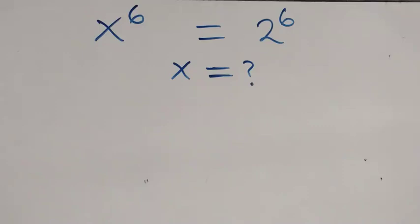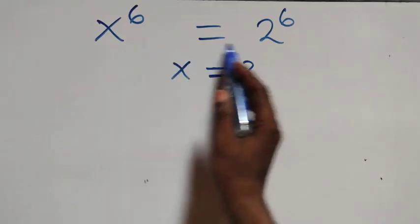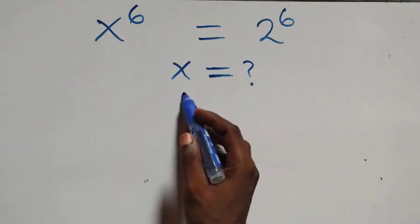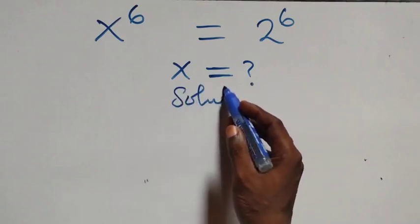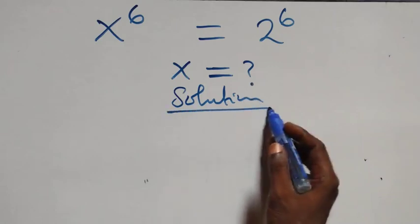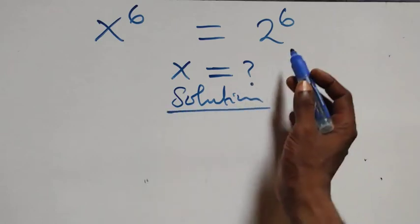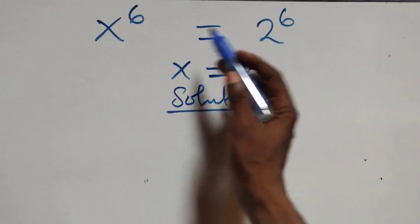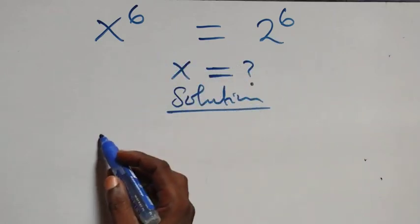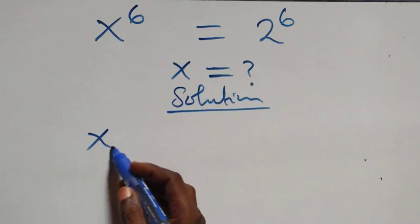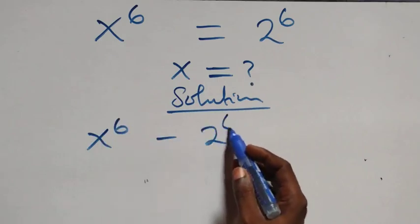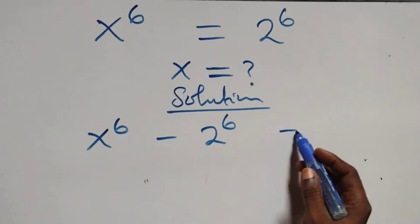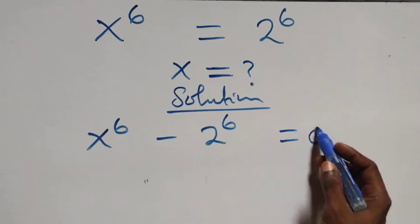Hello, you are welcome. How to solve this nice exponential equation. From what we have here, we can take 2 raised to power 6 to the left-hand side, so we have x raised to power 6 minus 2 raised to power 6 equals zero.